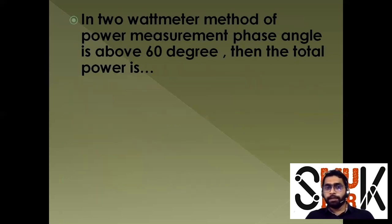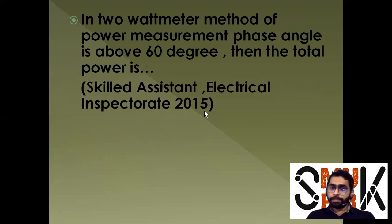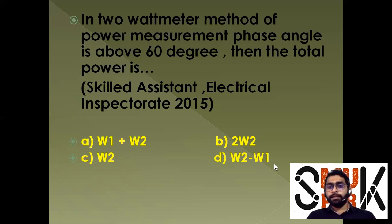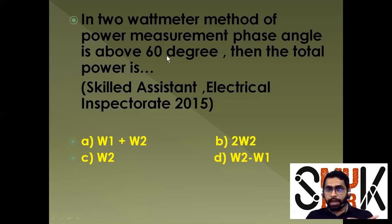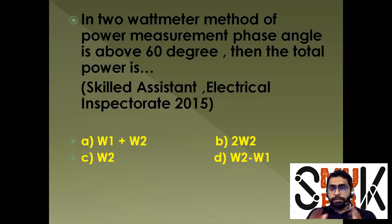Next question on the two-wattmeter method of power measurement: if the phase angle is above 60 degrees, then the total power is — options: A) W1 + W2, B) 2W2, C) W2, D) W2 - W1. When the angle is above 60 degrees (between 60 and 90 degrees), one wattmeter reading becomes negative; W1 is negative. So the total power is W2 - W1. The answer is D.